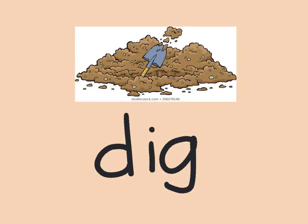So those were all of our short A words that make the A sound. Now we have our short I words. So again, I will put three dots and we'll say each sound, each part of the word together — the beginning, middle, and end. And then we'll say it all together.